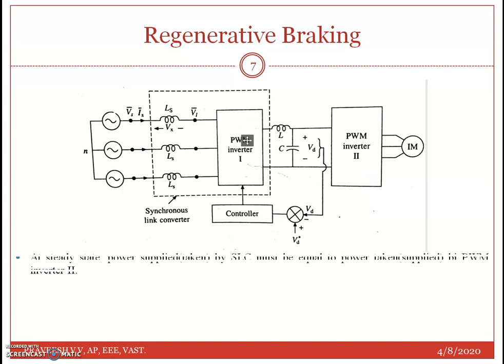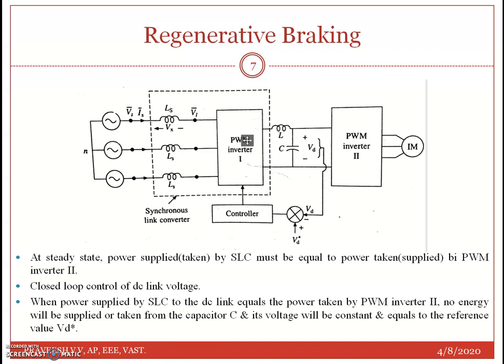If the drive is operating at steady state, the power supplied by the SLC must equal the power taken by PWM inverter 2. Since the two are independent of each other, this is achieved by providing a closed loop control of DC link voltage. When the power supplied by SLC equals the power taken by PWM inverter 2, no energy is supplied or taken from capacitor C, and Vd remains constant and equal to the reference value Vd*.